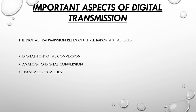Digital transmission relies on three important aspects: digital-to-digital conversion, analog-to-digital conversion, and transmission modes. Digital-to-digital conversion deals with representing digital data using digital signals and involves three techniques: line coding, block coding, and scrambling. Analog-to-digital conversion converts analog signals into digital signals; the most common method is pulse code modulation (PCM). Transmission mode refers to the mechanism of transferring data between two devices over a network, also called communication mode, and directs the flow of information.